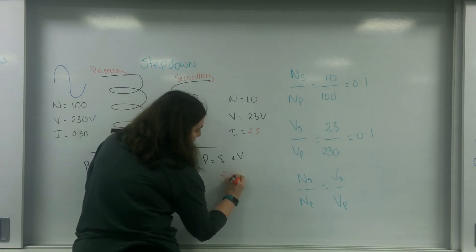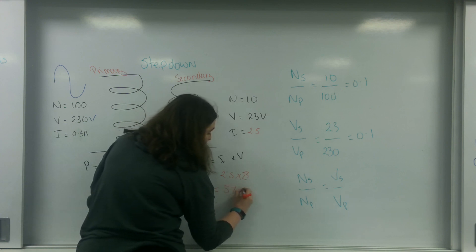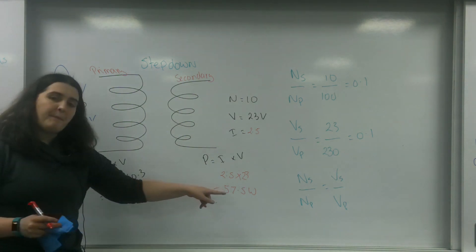So 2.5 times 23 equals 57.5 watts. So I've lost some power.